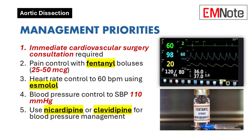After pain control, focus on heart rate control, targeting around 60 beats per minute. The preferred beta blocker is esmolol, because it specifically targets the heart and doesn't cause as much of a drop in blood pressure. We don't want a sudden blood pressure drop before heart rate is controlled, as that could actually worsen the dissection.